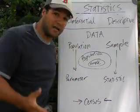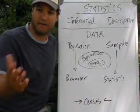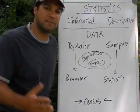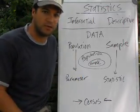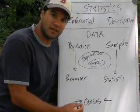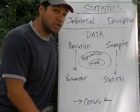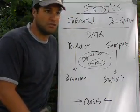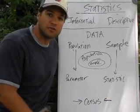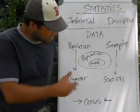When you gather information from the entire population, that's called a census. A census makes sense with small populations — like asking my whole family what pizza to order. But if I want to know how teenagers in the USA feel about Justin Bieber, I'm not going to find every single teenager. I can take a random sample of a few hundred teenagers and make an inference about what most teenagers think.